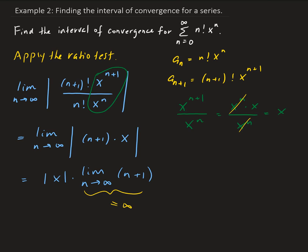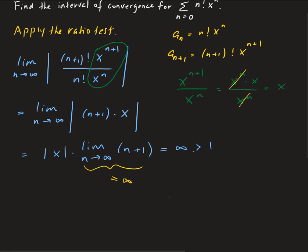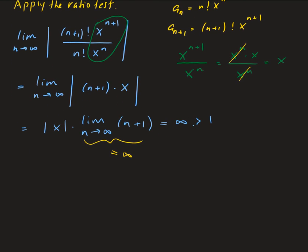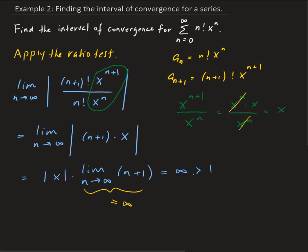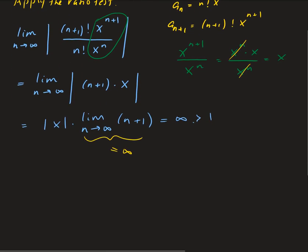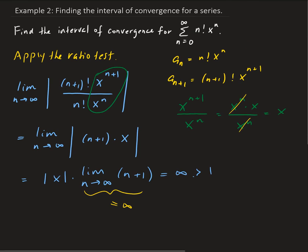Therefore, no matter what x is, this is going to go to infinity, which is bigger than one. So by the ratio test, this series is going to diverge for all x except at the center point. The series will always converge at the center.